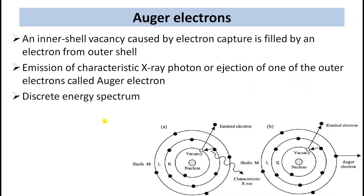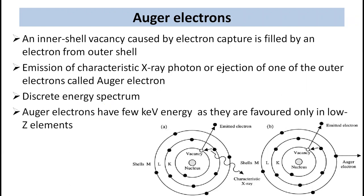Thus Auger electrons produce a discrete energy spectrum. Auger electrons have few kilo electron volt energy as they are favored only in lighter elements for which the electron binding energies are small.